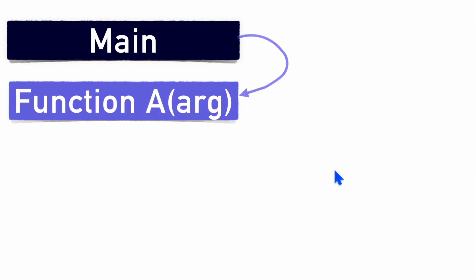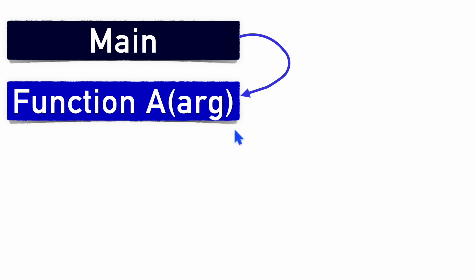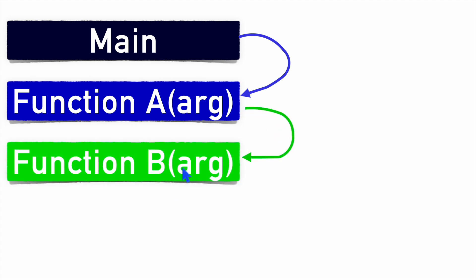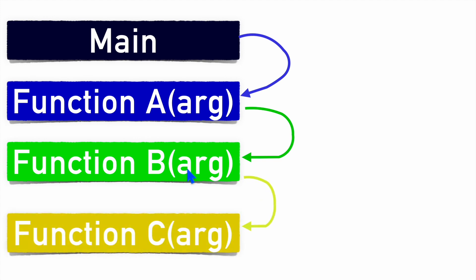Now let's see the actual use case of stack memory. Suppose your program has a main function from which you call function A with some arguments, from A you call function B with some arguments, and from B you call function C. So you have to jump from main to A, from A to B, from B to C, and once function C is fully executed, you have to return back.